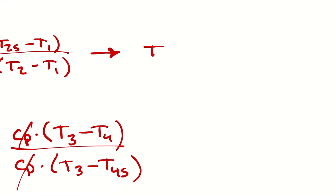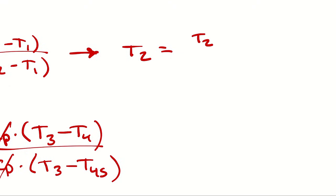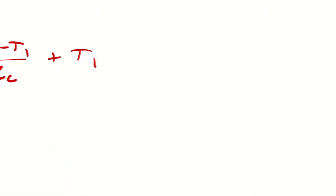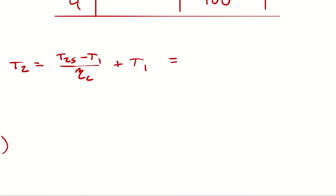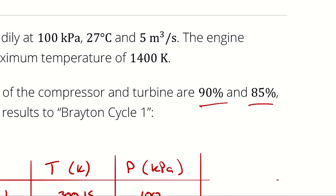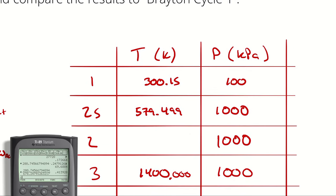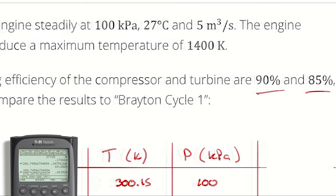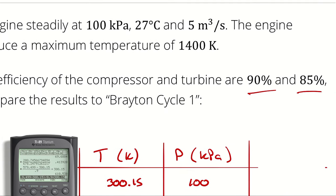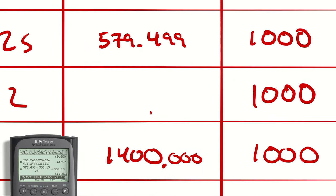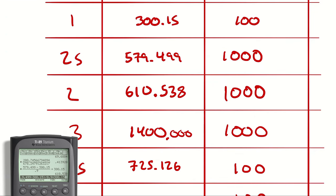Now, I can solve this for T2. Everyone stand back doing algebra. But no, it is fraught with possibility of error. It would be T2S minus T1 divided by ηC plus T1 and the isentropic efficiency of the compressor was 90%. Therefore, I am going to take 579.499 minus 300.15 divided by 0.9 plus 300.15 and I get 610. By the way, a quick way of checking that your numbers make sense is by remembering that friction tends to make things hotter. So, does it make sense that the outlet of the less efficient compressor is a higher temperature? Yes, it totally does.